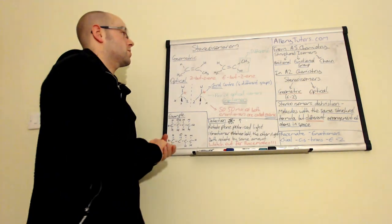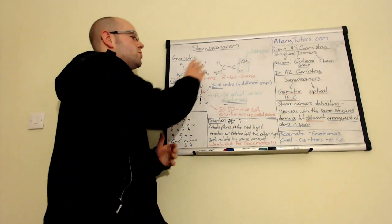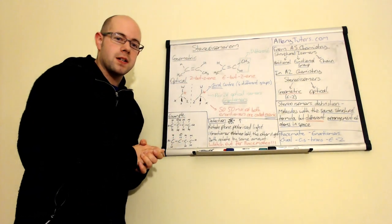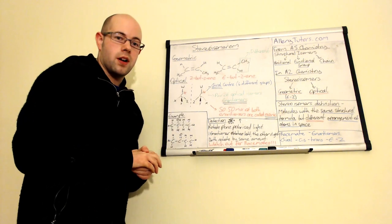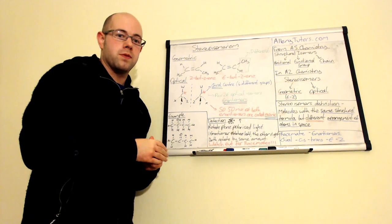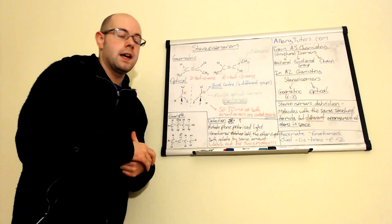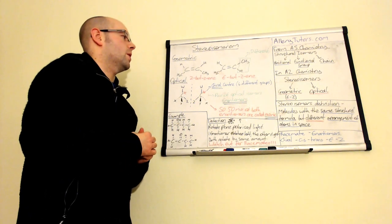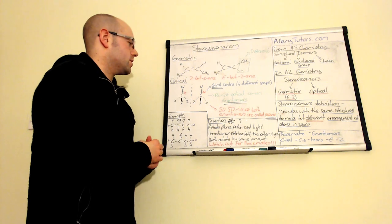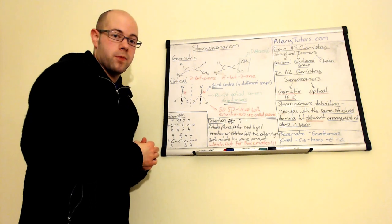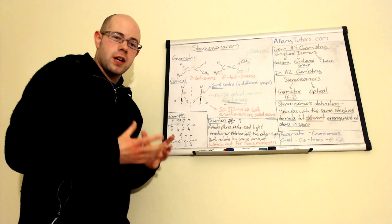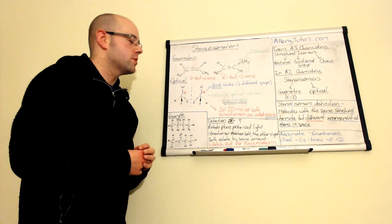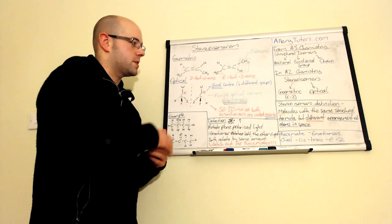And that's the first type of isomerism, that's geometric. And you do need to know how these things are made as well. There is a video that looks into the synthesis of E-Z molecules as well. Just check on the playlist to do with alkenes. And if you look at the next one, which is optical isomerism. Now, optical isomerism, the word actually optical gives it a bit of a clue, and it's to do with light.